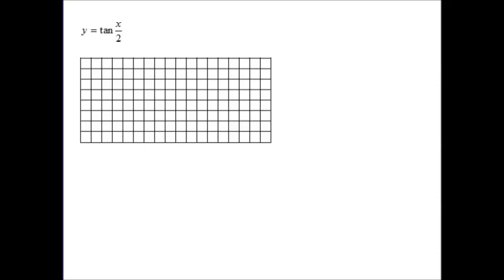Here's our first example: y is equal to the tangent of x over 2. The first thing we want to do is find our asymptotes. If we look at this expression, we have x over 2, and that is really minus 0 if you think about it. So this is our bx minus c, and that is equal to pi over 2.